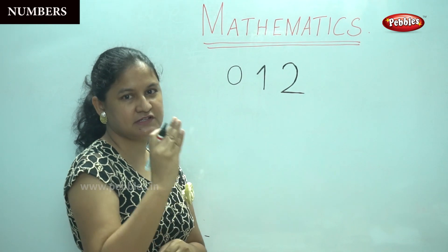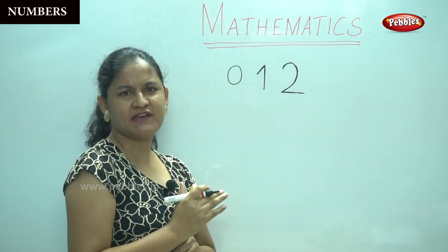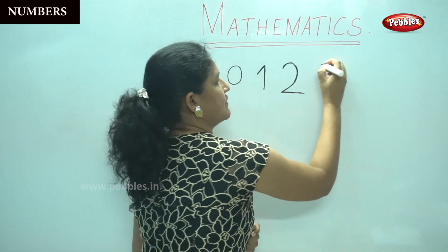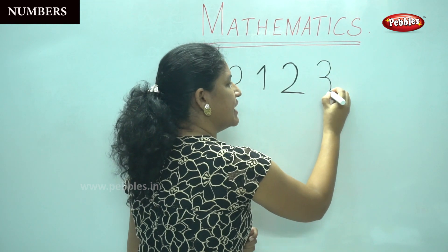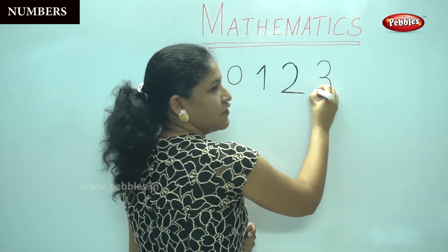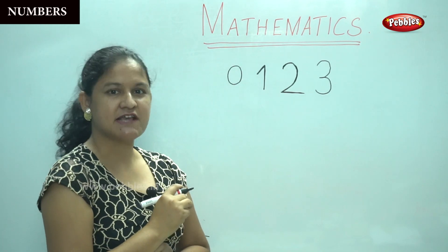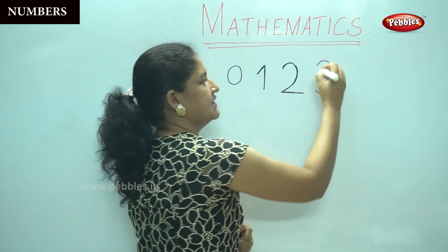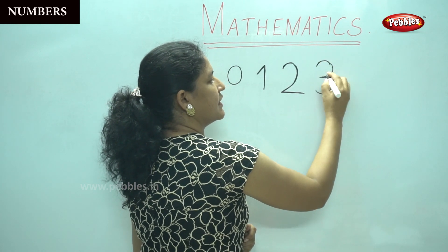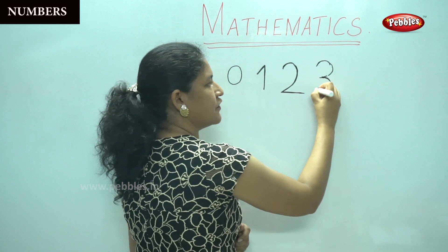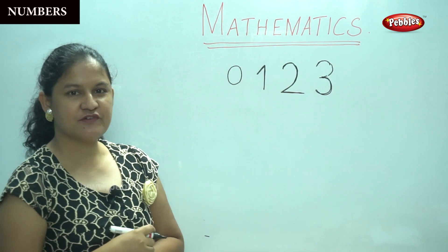Next, we are going to learn how to write number 3. Number 3 is very, very easy. You will write half a curve and the remaining half of the curve. So this is number 3. Shall we write it again? Yes — this is half a curve and the remaining half of the curve. Clear, children?